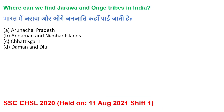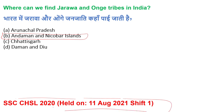Next question: Where can the Jarwa and Onge tribes be found in India? The Jarwa and Onge tribes are found in the Andaman and Nicobar Islands. This question is from SSC CGL 2020, exam held on 11 August 2021.